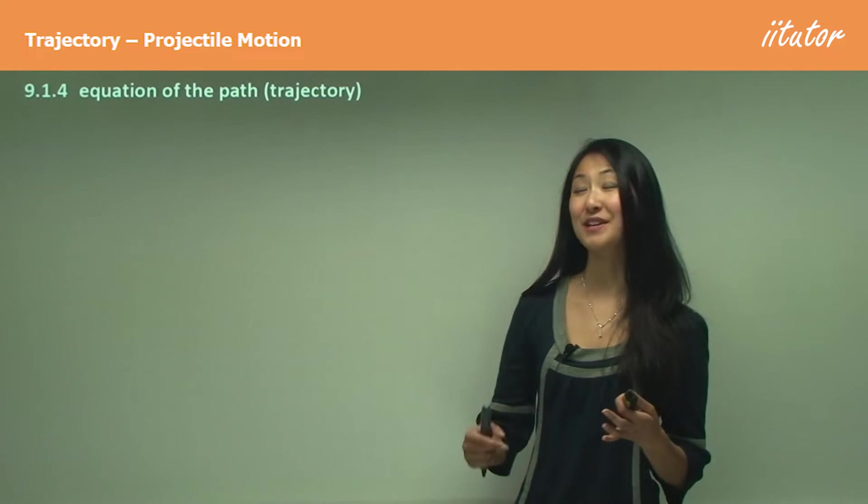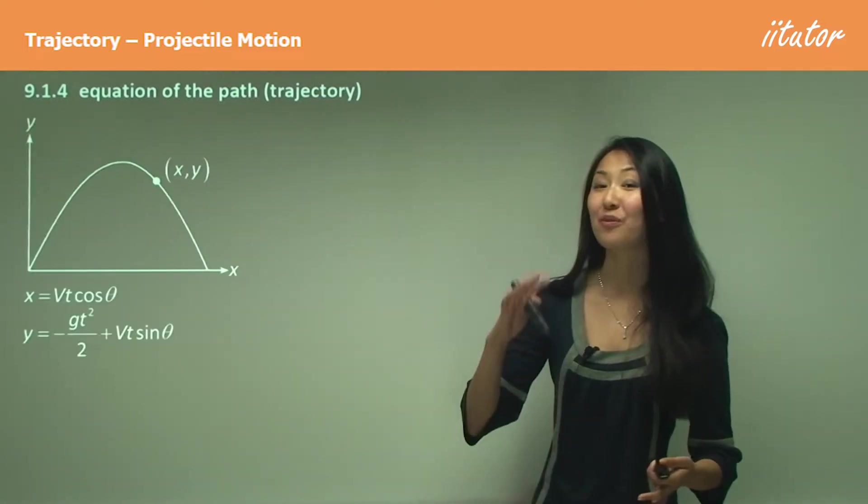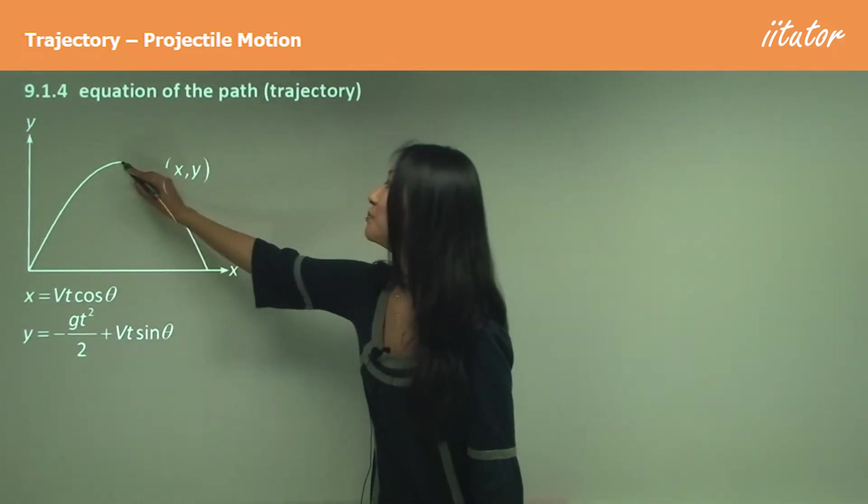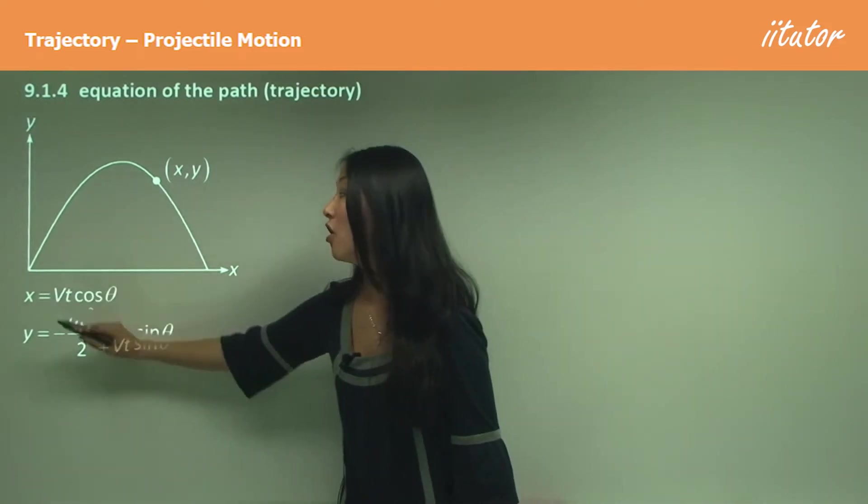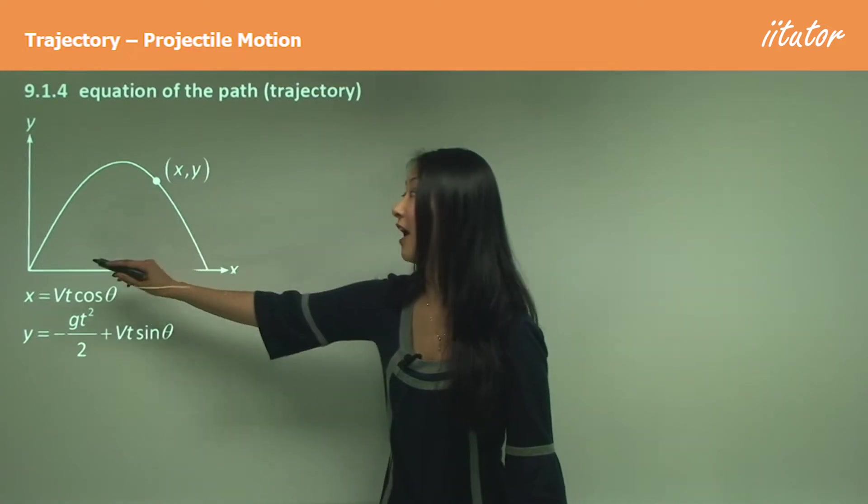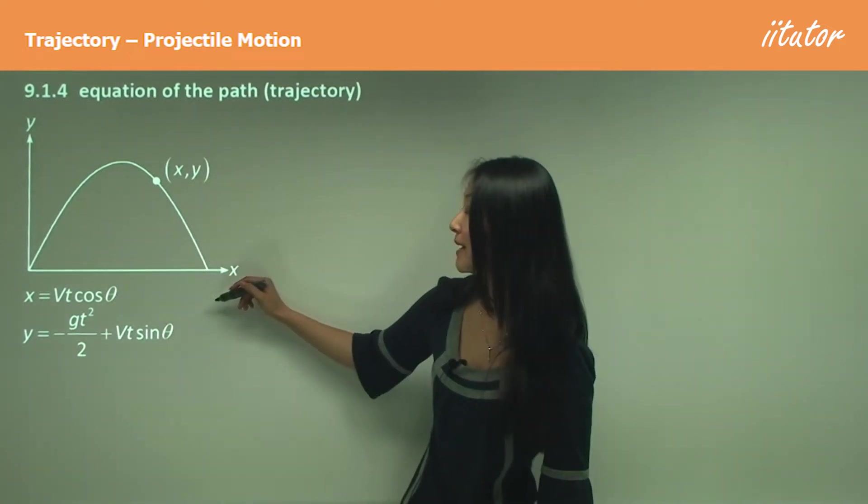Now I want to go through the equation of the path, otherwise known as a trajectory. This is the equation that the actual object moves along. So far we've only been doing horizontal displacement or motion, how far horizontally it goes, and then the vertical motion or displacement, how far vertically it's going.